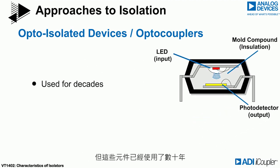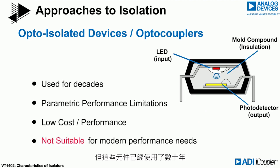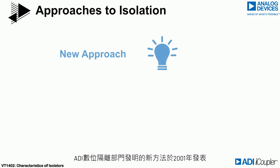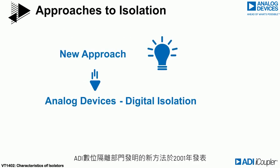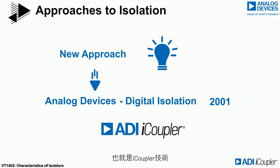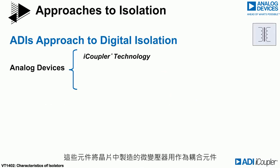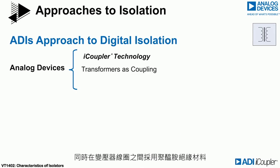The opaque mould compound separating the LED and detector provides the insulation. These devices were used for decades, even though there were many parametric drawbacks that hindered system performance. A new approach invented by Analog Devices, digital isolation, was introduced to the market in 2001 as i-coupler technology. These devices use microtransformers fabricated on chip as the coupling element with polyimide insulation between the transformer coils.